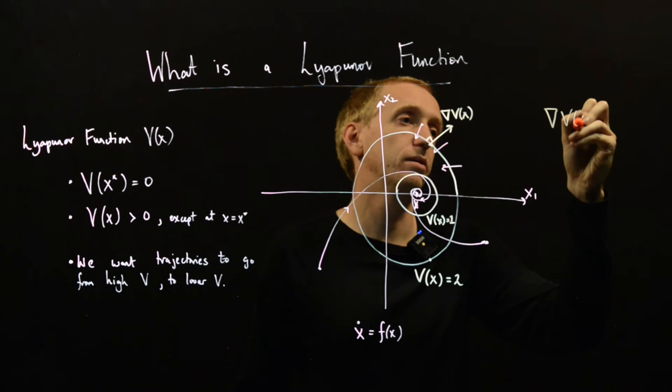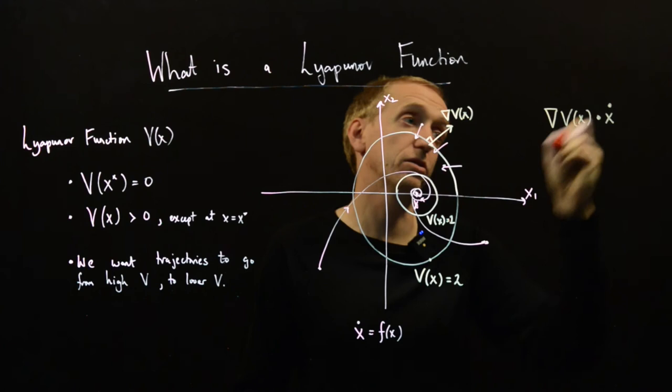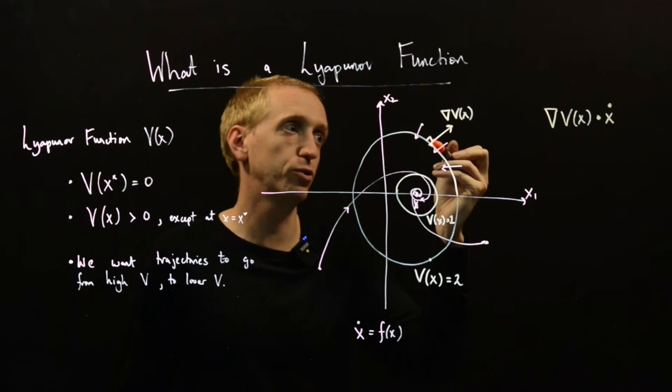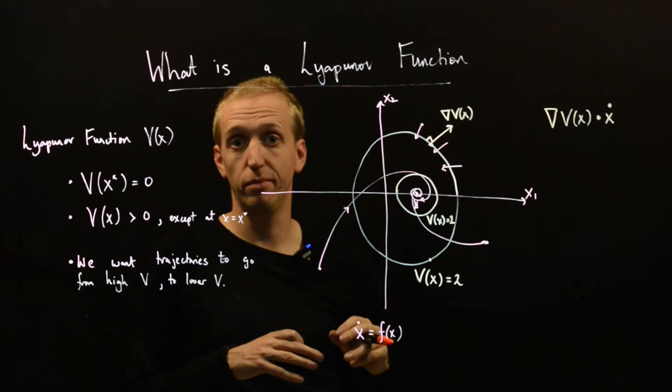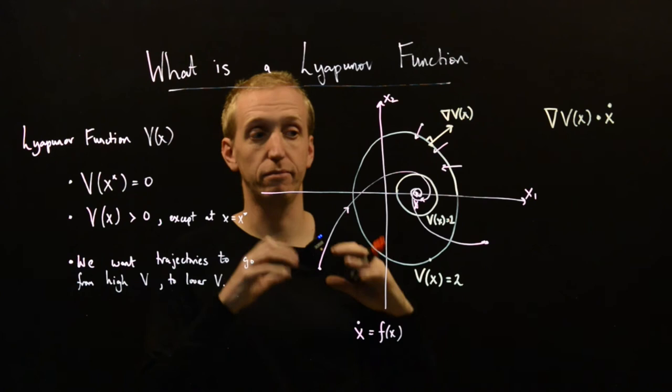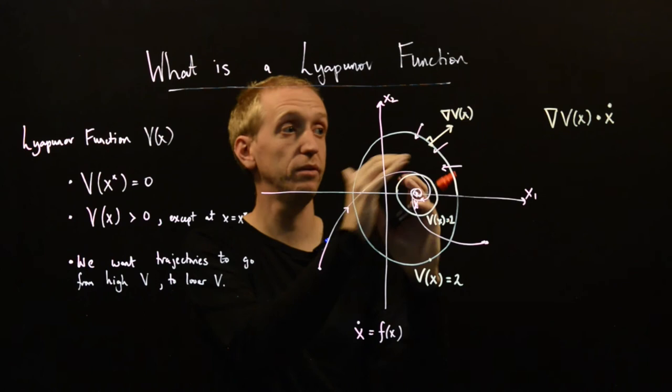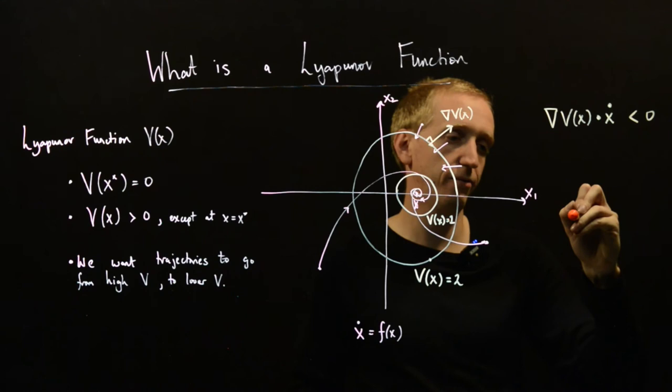And so now, how can we formalize this idea of trajectories pointing to directions of lower energy? We just need to use the dot product. And in particular, if we look at grad v of x, and we dot product it with x dot. So this is the direction in which x is changing. And in our phase portrait, we can see what these things look like. This is what grad v of x looks like. x dot looks like arrows going like this. And so what's the condition to be moving from an area of higher energy to an area of lower energy, or an area of higher values of the Lyapunov function to an area of lower values of the Lyapunov function? Well, it's just that this thing